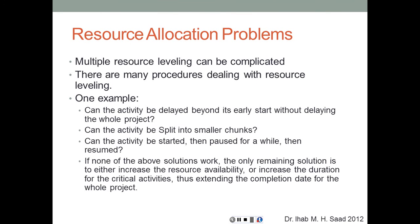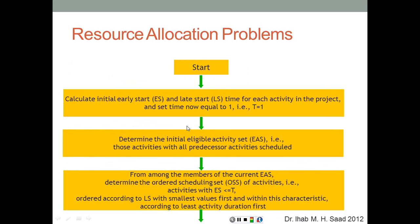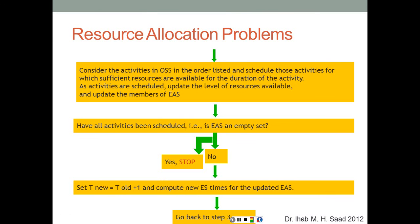A flowchart shows the resource allocation algorithm: calculate initial early start and late start for each activity, determine the eligible activity set with all predecessors scheduled, and proceed accordingly. With two or more resources to allocate and level simultaneously, software is typically needed due to the large number of permutations involved. This concludes the brief introduction to resource allocation; a numerical example will be posted for further practice.